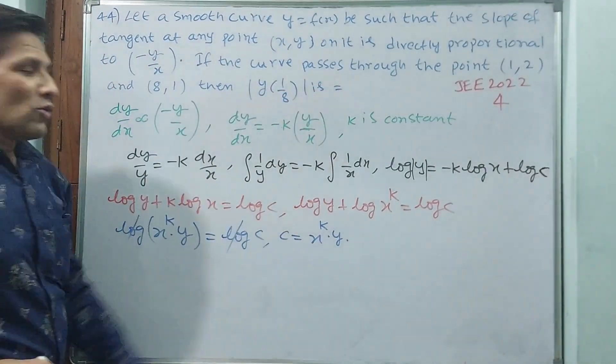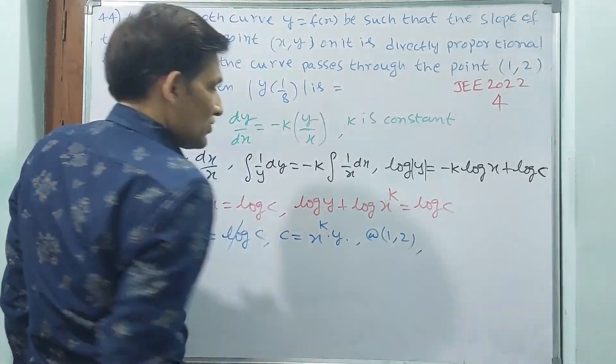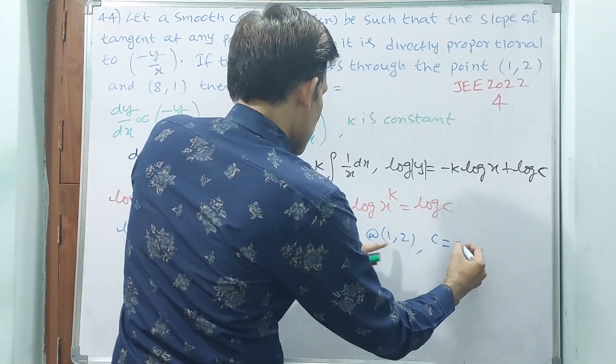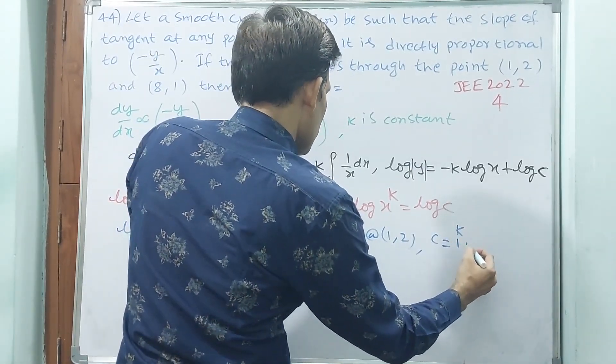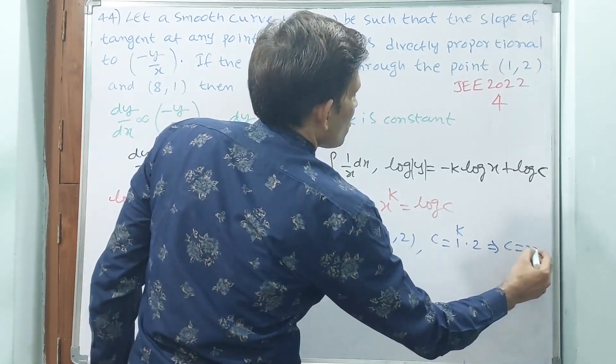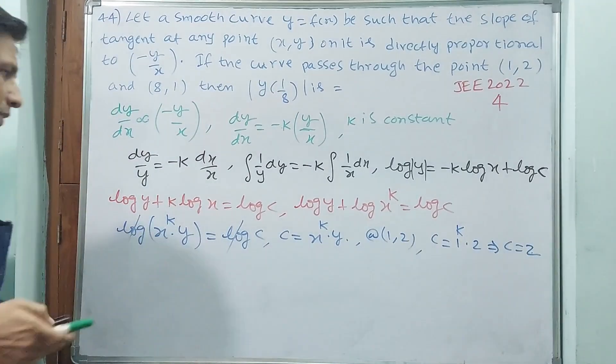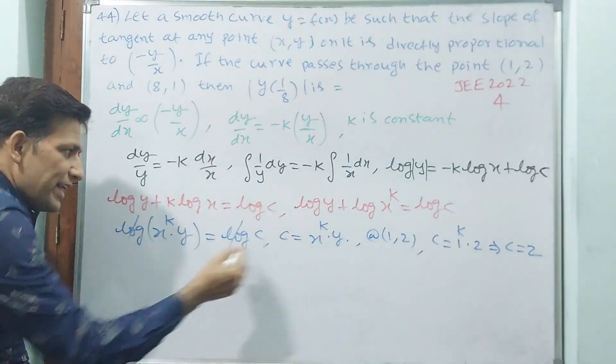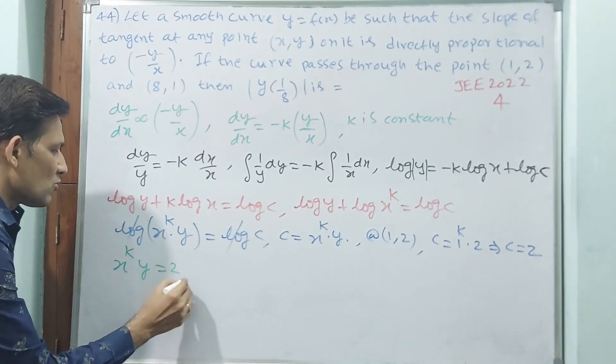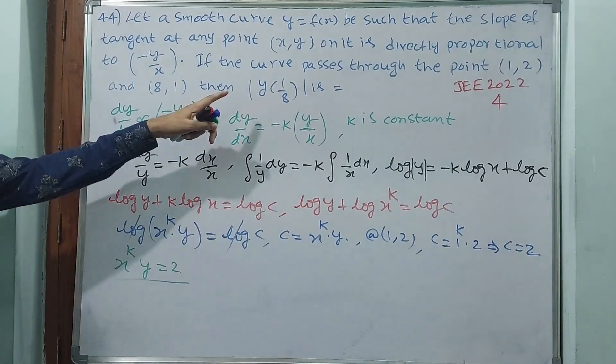Passing through (1,2) both. That means at 1 comma 2: 1 means x, 2 means y. That means c is equal to 1 power k into y means 2. That means c is equal to 2. If c is equal to 2, that means x power k into y is equal to 2. This is your equation.